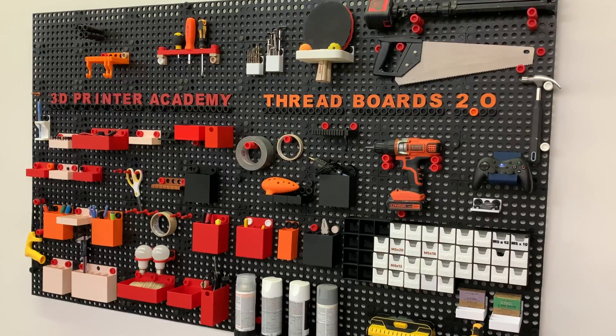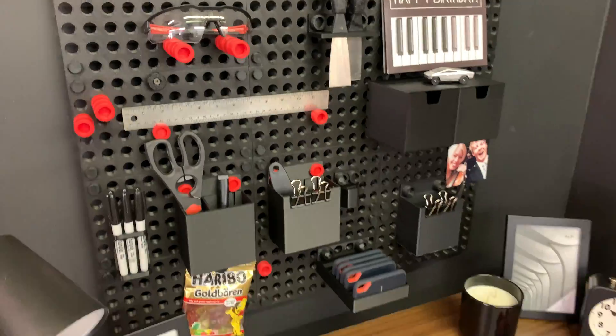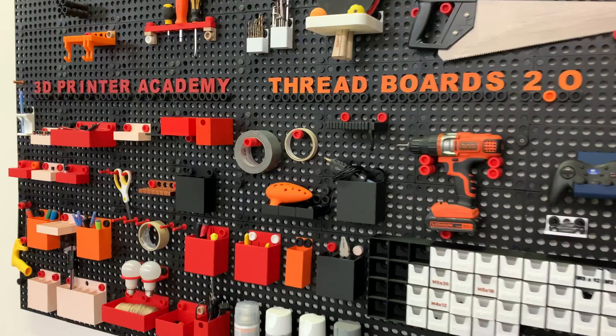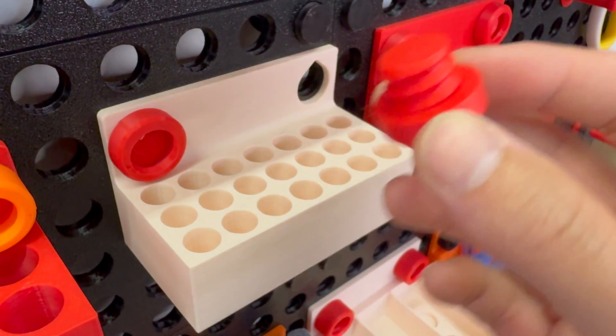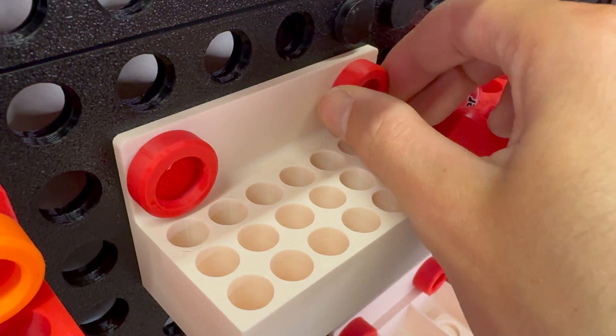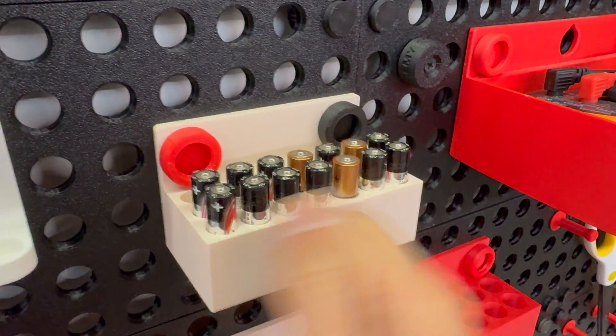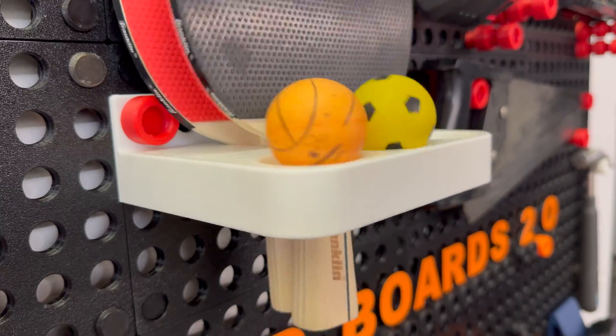This is Threadboards 2.0. But what exactly is Threadboards and what is new in version 2.0? First, because of the threaded peg design, attachments are secured tight to the boards. So you don't have to worry about anything rattling or shaking or falling off.